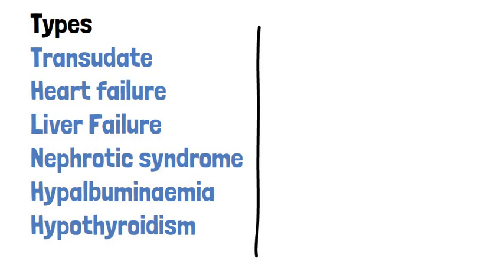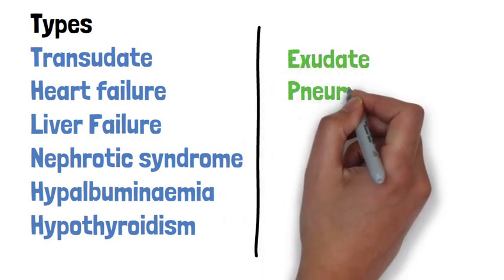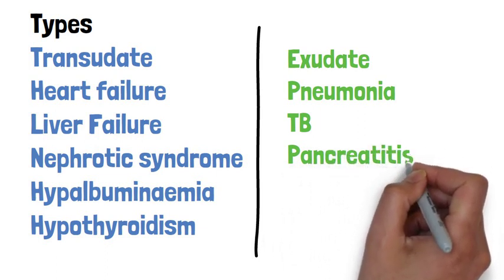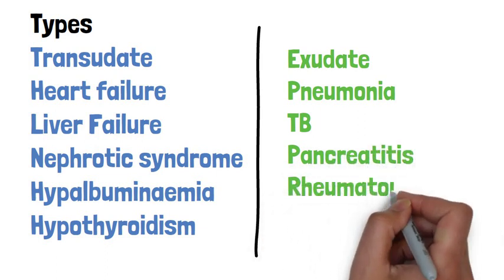Causes of exudate pleural effusion, on the other hand, include things like rheumatoid arthritis, pancreatitis, pneumonia, lung cancer and TB.